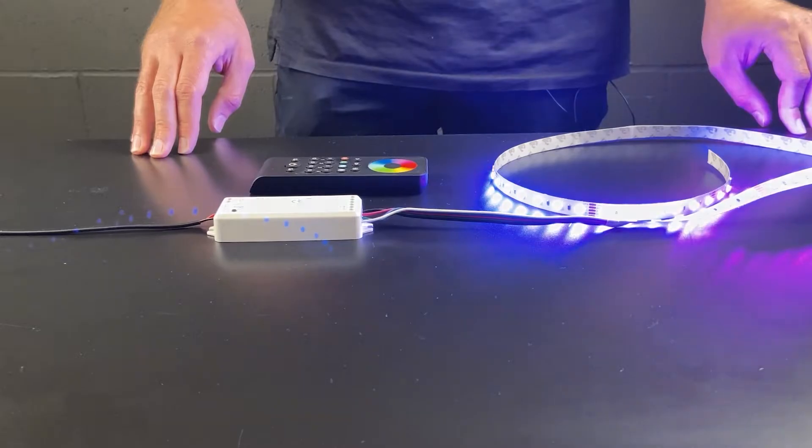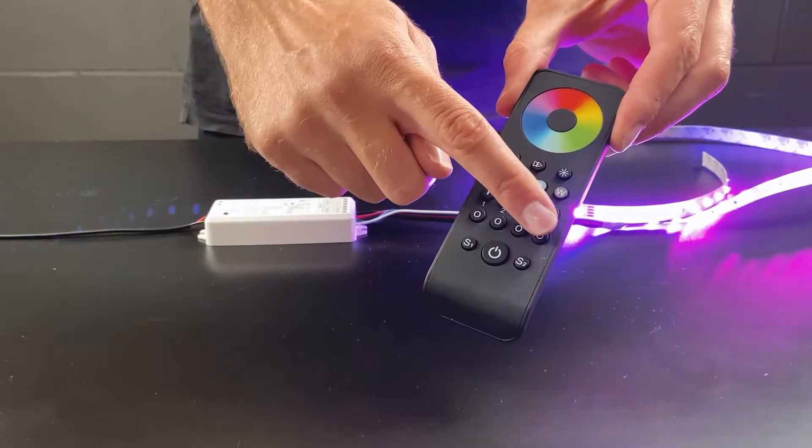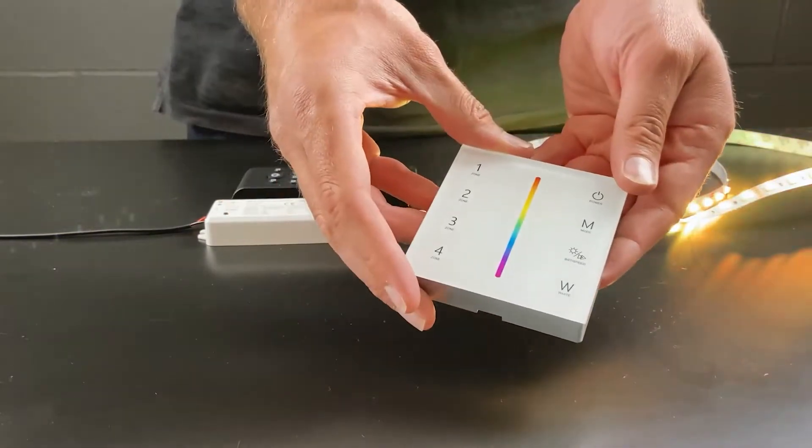The main features for the WT5 receiver are that it can be wirelessly controlled over RF frequency using our multi-zone remote and wall plates.